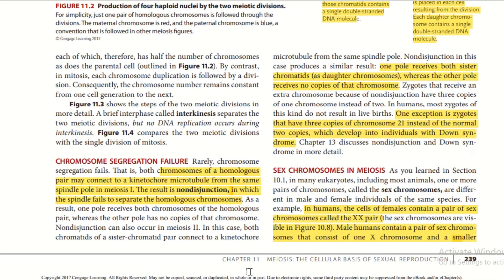A zygote that receives an extra chromosome due to non-disjunction has three copies of one chromosome instead of two. In humans, these zygotes generally do not survive to live birth. One exception is a zygote with three copies of chromosome 21 instead of the normal two, which develops into an individual with Down syndrome.